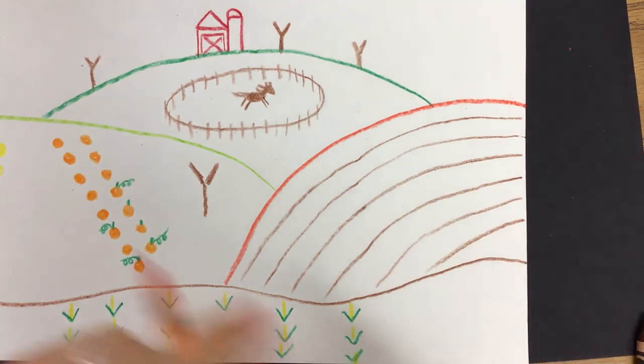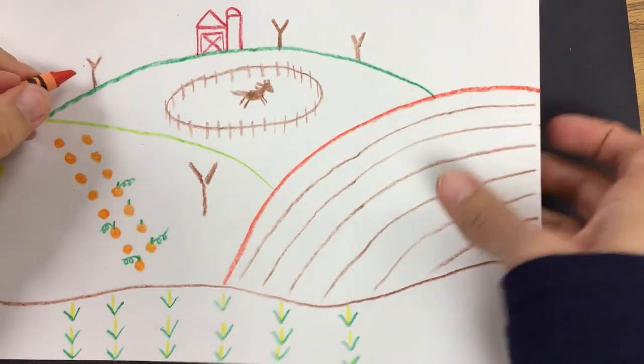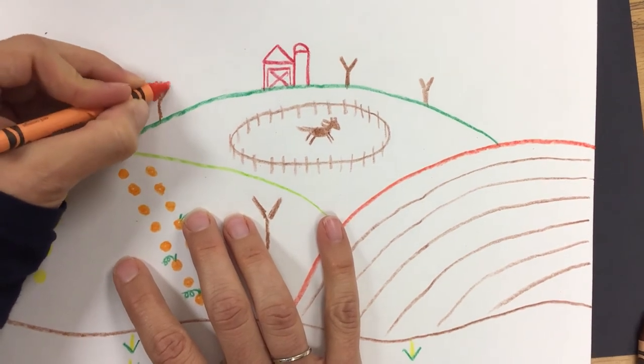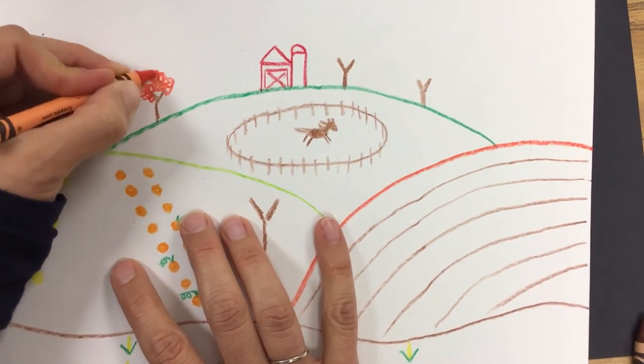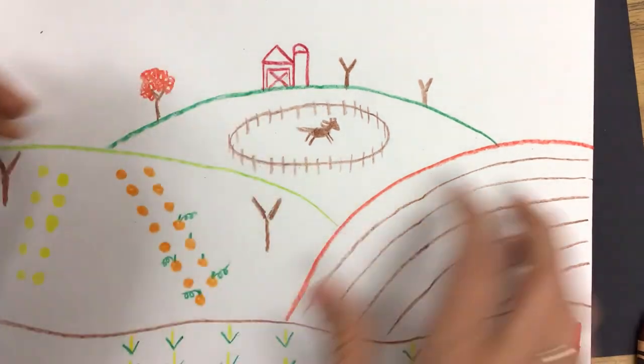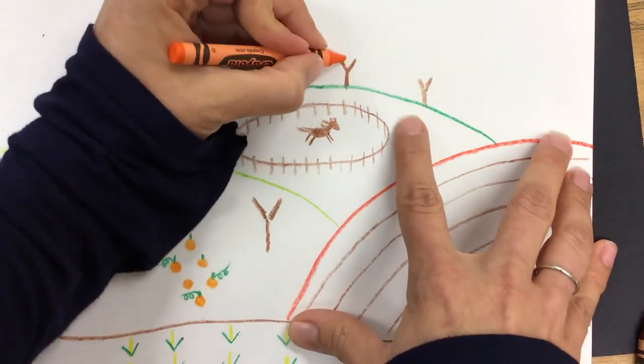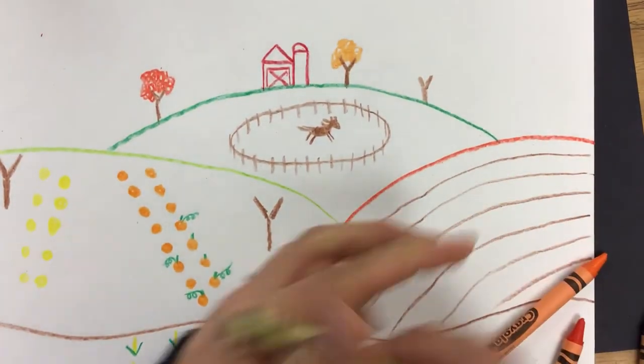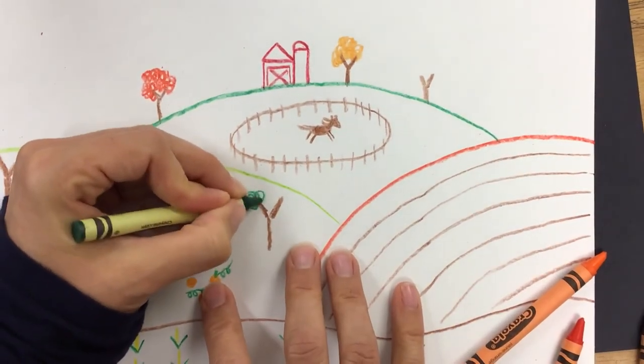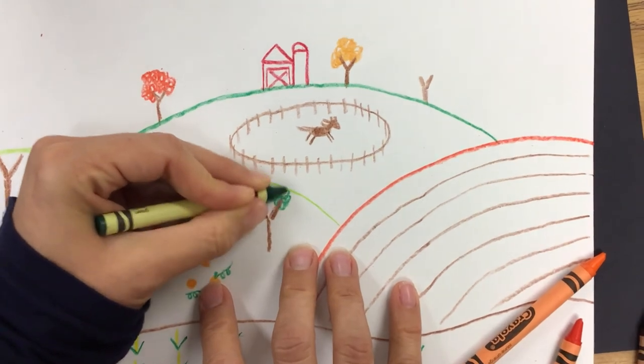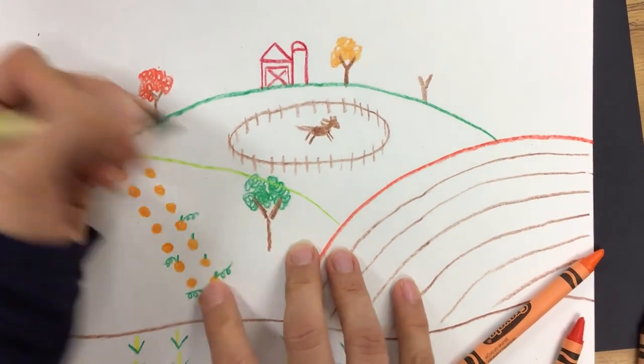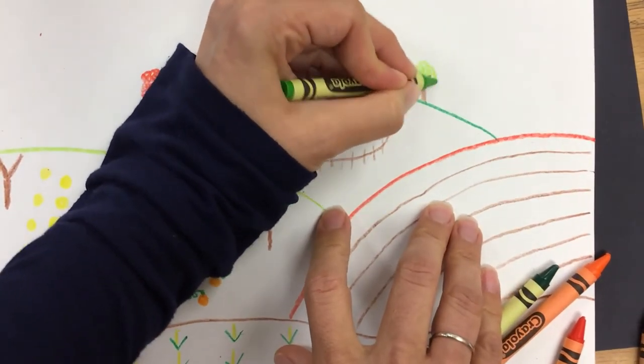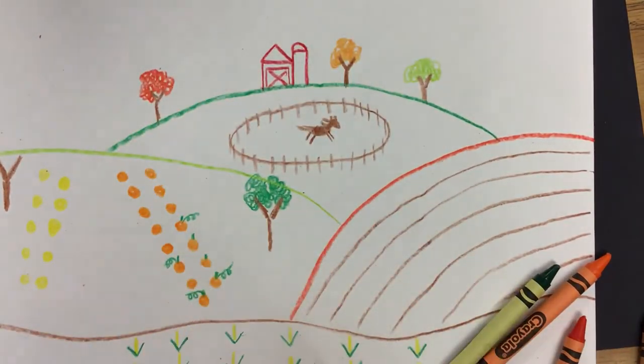And then I'm going to use my curlicue lines and make some fall leaves. This is a real quick easy way to make leaves on a tree. I just do curlicue lines that go around and around and the tree looks nice and fluffy and full of those fun fall colors. I can switch to maybe an orange one over here. Maybe this tree is still green. Some don't change colors at the same time. This one's getting to be a yellow green and so on.